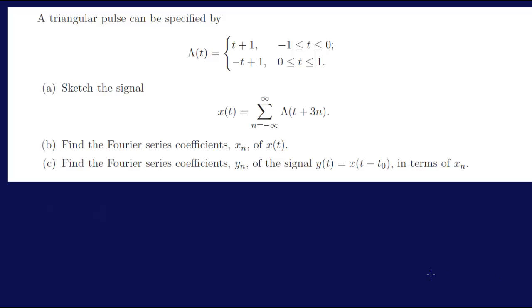A triangle or pulse function can be specified by λ(t), which is given as t plus 1 for t between minus 1 and 0, and minus t plus 1 for t between 0 and 1.